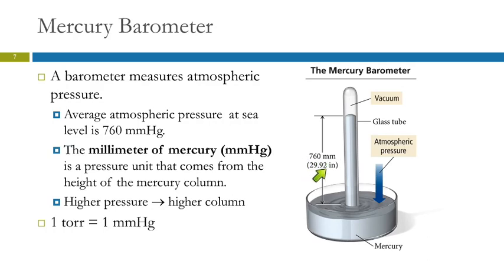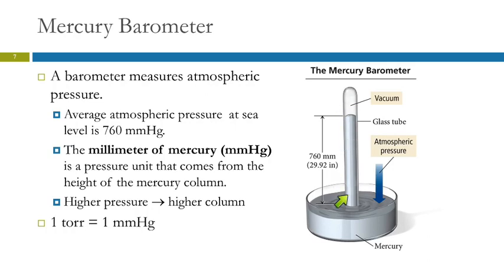Think of a glass tube about a yard long, filled with liquid mercury. Mercury is a metal that is liquid at room temperature with a high density of about 13.6 grams per milliliter. You invert it into a dish of mercury. Some of the mercury runs out, but a column of mercury remains.